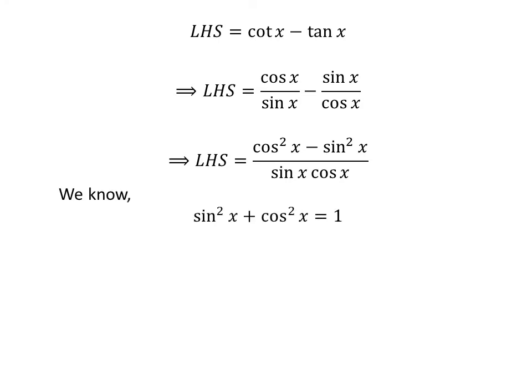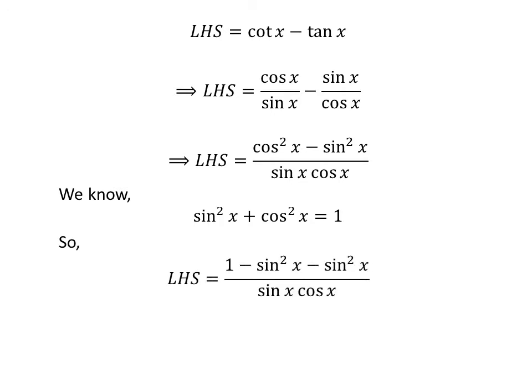As we know, square of sine of x plus square of cosine of x is equal to 1. From this identity, we can deduce that 1 minus square of sine of x is equal to square of cosine of x. Thus, the left hand side of the identity is equal to 1 minus square of sine of x minus square of sine of x, upon sine of x times cosine of x.